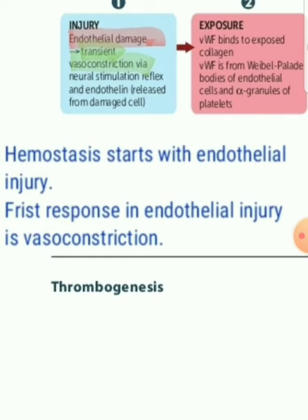The MCQ point is: hemostasis starts with endothelial injury. Whenever there is endothelial injury, there is release of endothelin, which causes a reflex vasoconstriction. Whenever injury occurs, the body tries to prevent extra blood loss by initial vasoconstriction. There is no activation of platelet yet, there is no activation of coagulation factors. So the first response is a physical one — transient vasoconstriction via neural stimulation reflex and endothelin released from damaged cells. Hemostasis starts with endothelial injury, and the first response is vasoconstriction, not platelet activation.